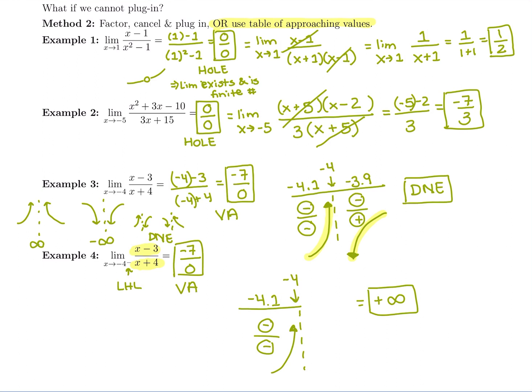So there's our second method. If plugging in gives 0 over 0, factor, cancel, and plug in to get a regular finite number. If plugging in gives a number divided by 0, you can try to factor, but you'll likely need to make a table of approaching values — and your answer will be infinity, negative infinity, or does not exist. In the next video, we'll explore more examples because this is pretty difficult.